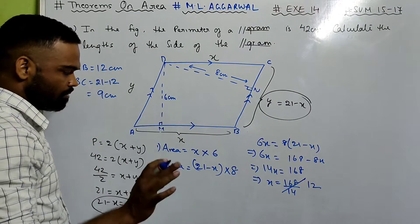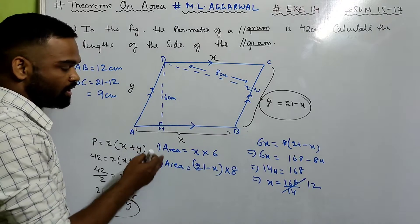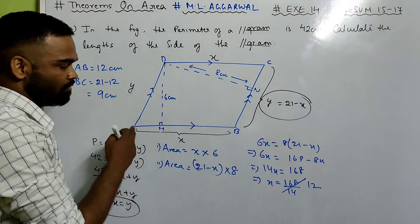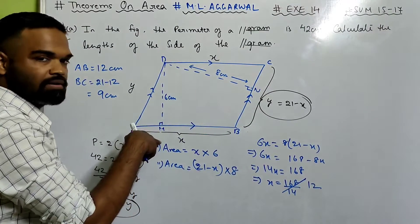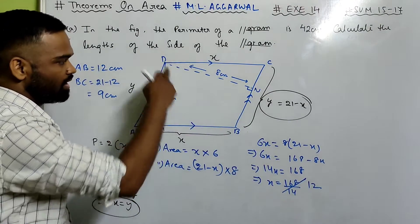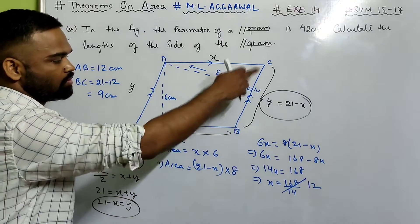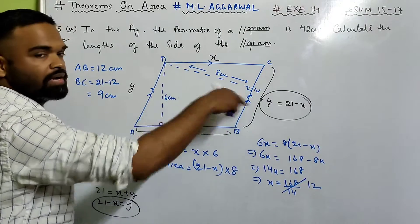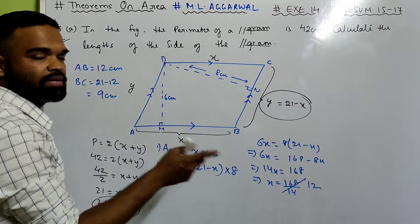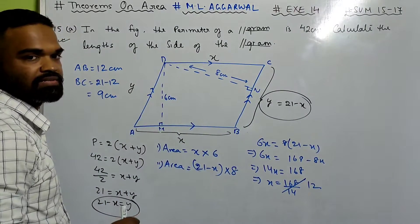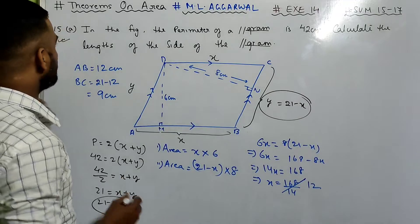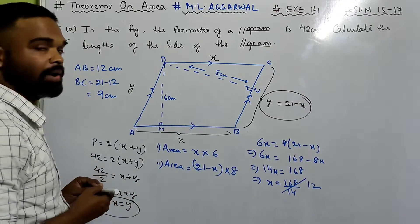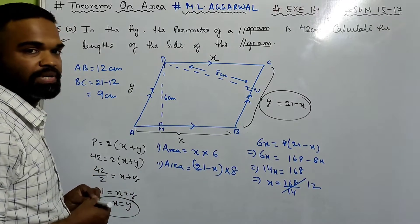Done. We equated the areas. Using AB we got area AB times 6. Using BC we got area BC times 8. Equate them and you get the answer. Now look at 15 part B.